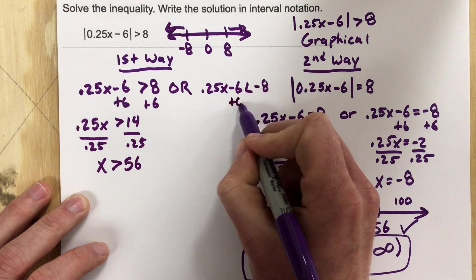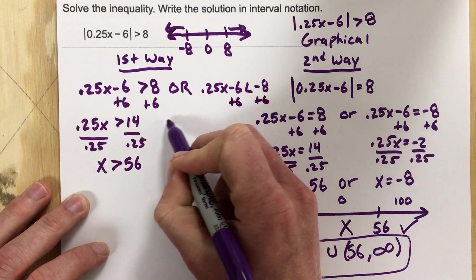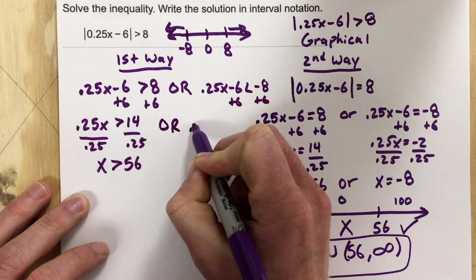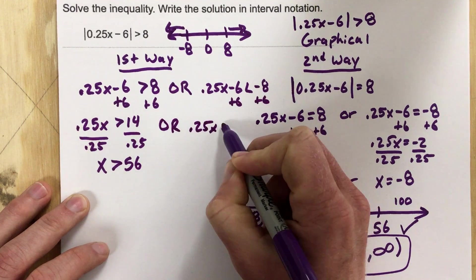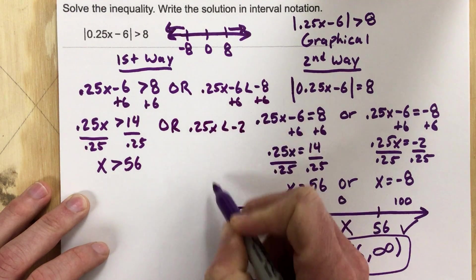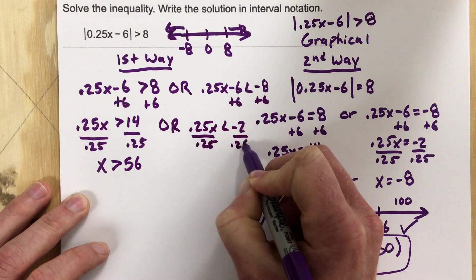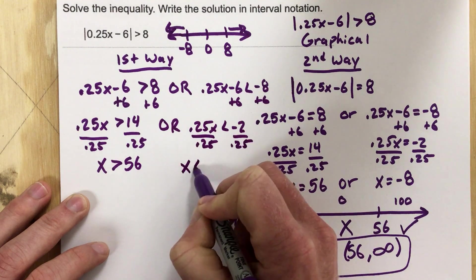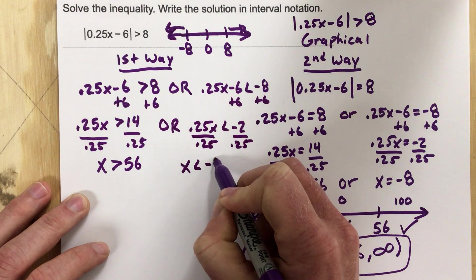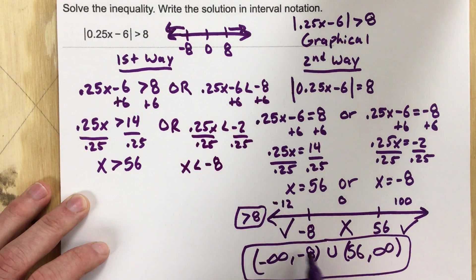And then I'm going to add 6 to each side here, and I get or 0.25x less than negative 2. Divide by 0.25, I get x less than negative 8, which is this piece right here.